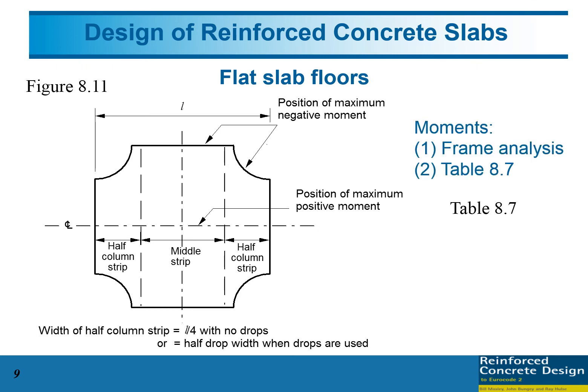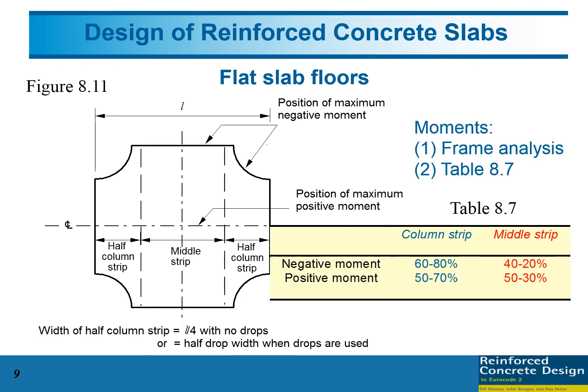From Figure 8.11 and Table 8.7, you can see the slab has a middle strip and half column strips on each side. The width of each half column strip is lx over 4 for the case with no drop panel. To calculate the moment, you can do a frame analysis using software, or a manual calculation using Table 8.7.